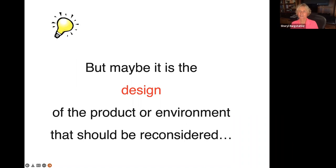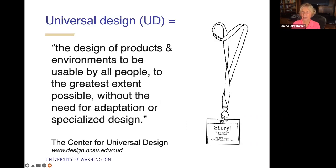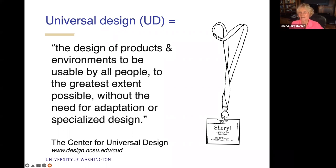Rather than focusing on accommodations only — where after the fact we remediate documents and give extra time on tests — we should think about how we can build accessibility into the design of the product or environment, which in this case is an online course. That leads us to the definition of universal design: the design of products and environments to be usable by all people to the greatest extent possible without the need for adaptation or specialized design. We look through those accommodations — like inaccessible documents we had to remediate — and ask: could we have made that document accessible from the start? Could we have made our videos accurately captioned? Then a student wouldn't need that accommodation.